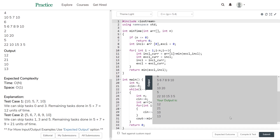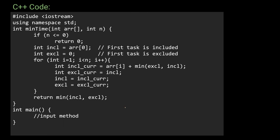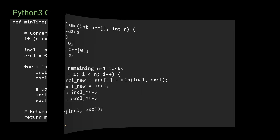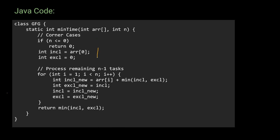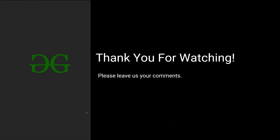That's the C++ code. The corner condition is n <= 0 returns 0. The Python 3 code follows the same steps: create variables, assign base conditions, fulfill the logic, and return min(include, exclude). The Java code does the same. That's it for this video — if you liked it, give a like, put any queries in the comments, and subscribe to our channel. Stay home, stay safe, and see ya!